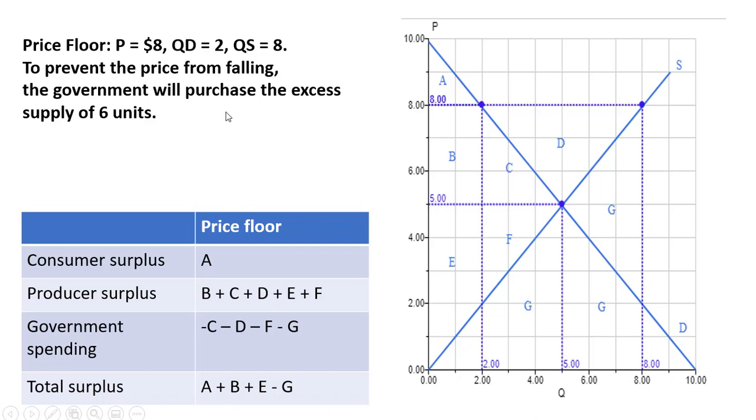To prevent the price from falling, the government will purchase the excess supply of six units. The eight minus two is the excess supply, and the government will purchase those six units to keep the price from falling to its equilibrium price.